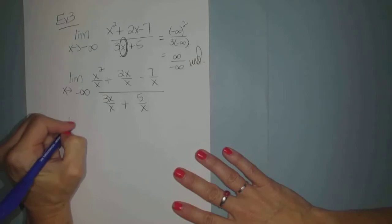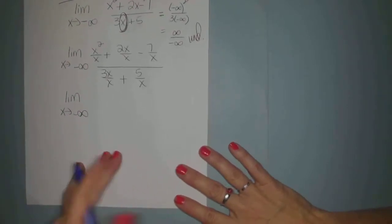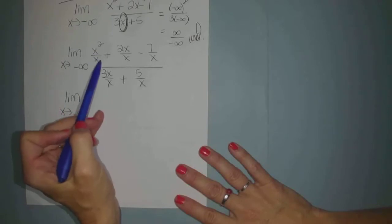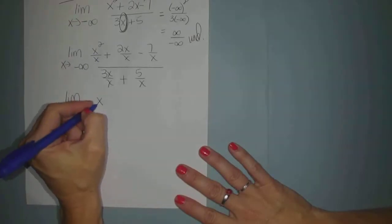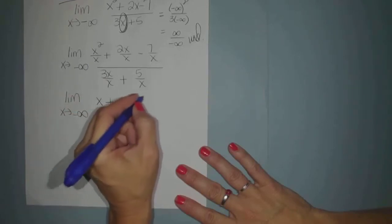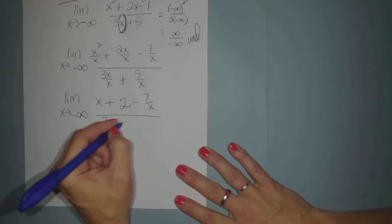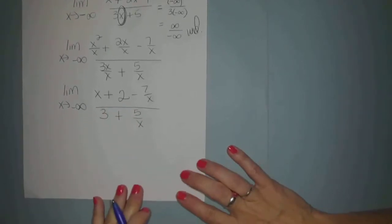Step 3 tells me to reduce. And that's going to give me x squared over x is just x. 2x over x is just 2. 7 over x stays the same. 3x over x is 3. And 5 over x stays the same.